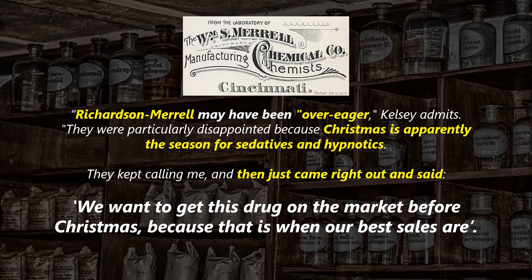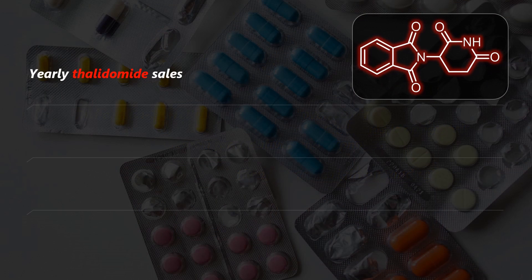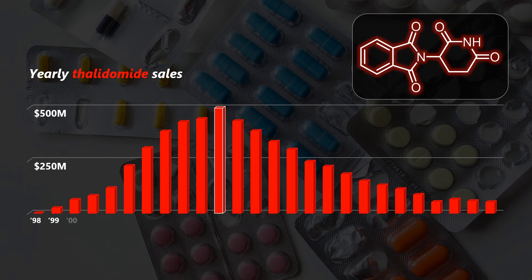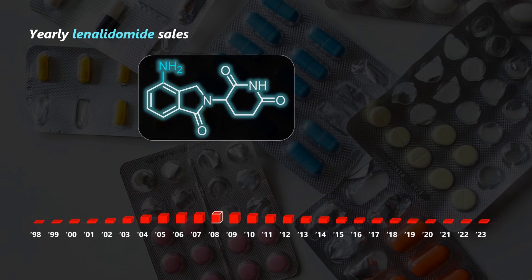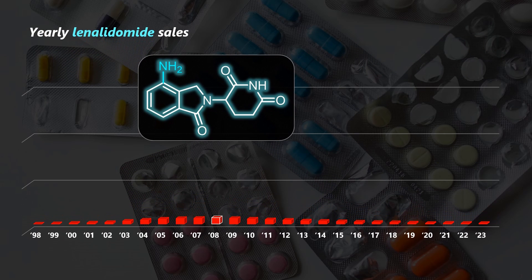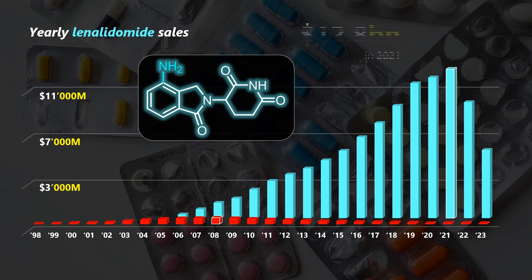If you think the heartbreaking tragedy sealed thalidomide's fate, you couldn't be more wrong. Half a century later, it generated up to 500 million dollars in sales for a pharma company — and that's before the eye-watering 12 billion dollars brought in by a slightly modified, much more expensive version of thalidomide more recently.